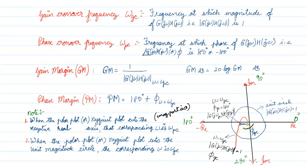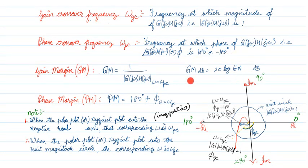Remember, gain margin in a polar plot is expressed as 1/magnitude. Gain margin in a Bode plot is expressed in decibels as 20·log(gain margin). Understand the difference: if you are using a Bode plot, take gain margin in decibels; if you are using a polar plot or Nyquist plot, take the gain margin as the ratio 1/magnitude.